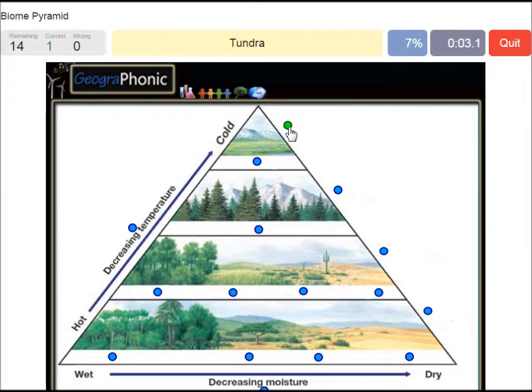Arctic, the tundra, a desert, a shrubland, savanna, decreasing moisture this way, a semi-desert.